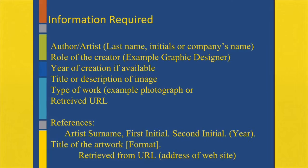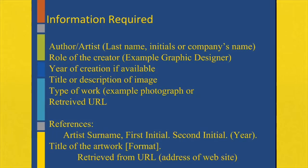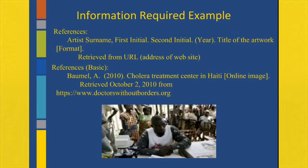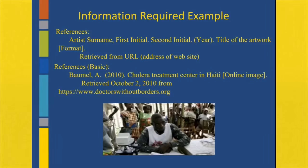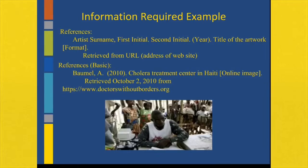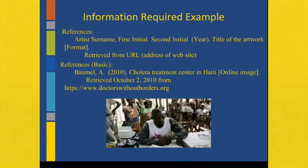Below I have listed an example of how your source should look step-by-step. Here we have an example of an image retrieved from the Doctors Without Borders website. We first list the author's last name, first initial, the year, then the website name, and we let our reader know that it's an online image, when it was retrieved from the website, and then the website URL.